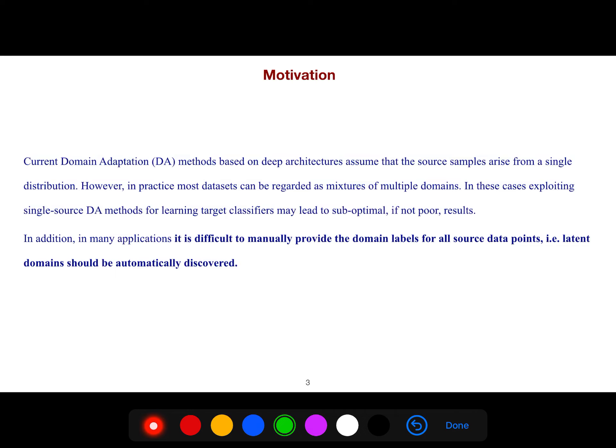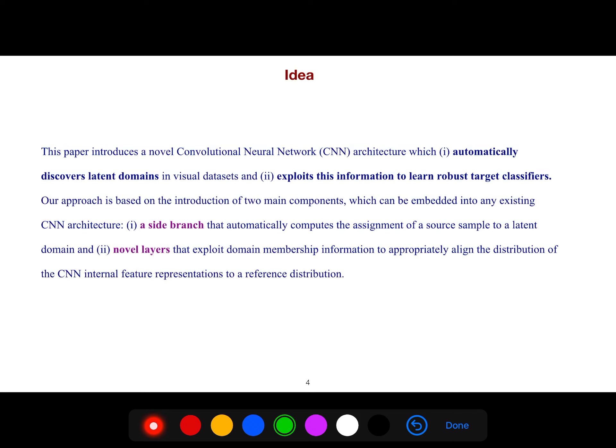This paper introduces a novel convolutional neural network architecture which automatically discovers latent domains in visual datasets and exploits this information to learn robust target classifiers. Our approach is based on the introduction of two main components which can be embedded into any existing CNN architecture: a site branch that automatically computes the assignment of a source sample to a latent domain, and novel layers that exploit domain membership information to appropriately align the distribution of the CNN internal feature representations to a reference distribution.